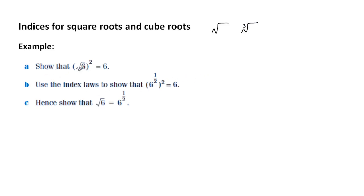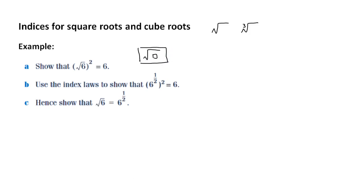Now, in order to show that the square root of 6 all squared is equal to 6, you really need to use a calculator. The buttons you've got to look for are, first of all, the square root button — it will look something like this on your calculator. You'll also need to use the power button, which looks like this or something like this on your calculator.